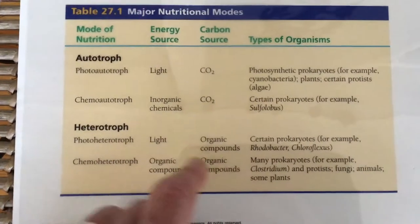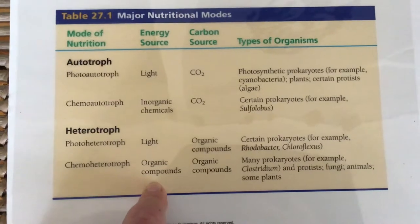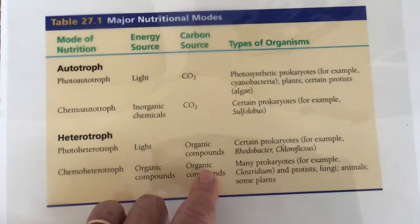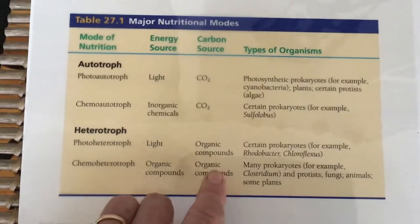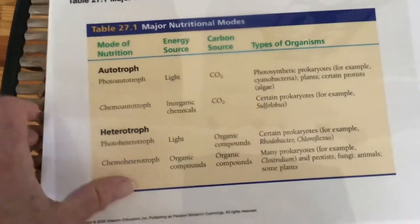Chemoheterotrophs use organic compounds as an energy source as well as a carbon source. These are the typical heterotrophic nutritional mode that you think of.